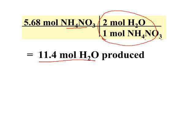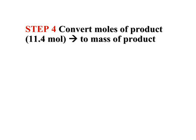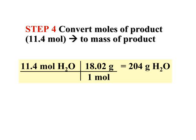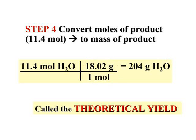Taking our moles of ammonium nitrate from the previous calculation and applying the mole ratio gives us 11.4 moles of water produced. Our final step is simply to convert that back to grams using the molar mass of the product. Water has a molar mass of 18 grams per mole, so moles of water to grams of water gives us a final answer of 204 grams of water. This 204 grams is our theoretical yield — the yield we get if nothing goes wrong in lab, and we can calculate it prior to even going into lab using stoichiometry.